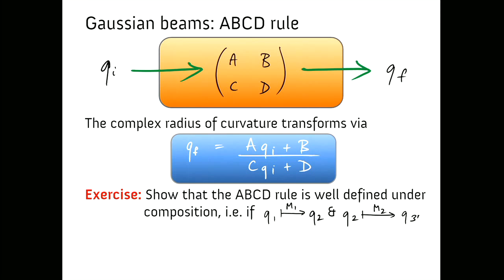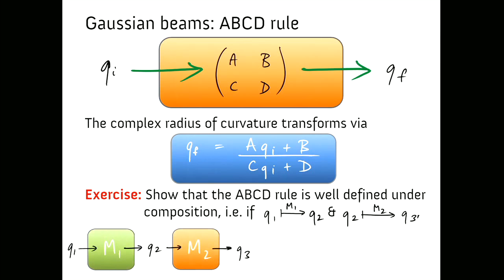It's not enough to postulate the ABCD rule — we must also show it's physical. If we have two optical systems M1 and M2, we can transform q1 to q2 using M1, then q2 to q3 using M2. We also know we can skip the middle step and multiply M1 and M2 together to get q3 from q1 directly. You'll have to show on an assignment that the ABCD rule is well defined under composition.